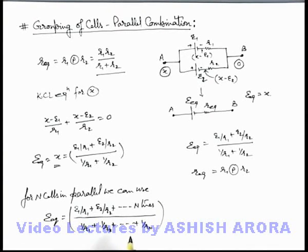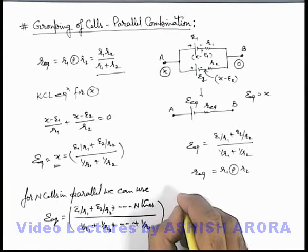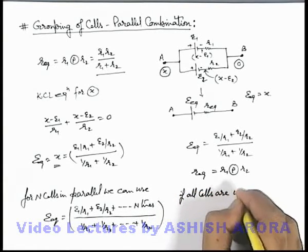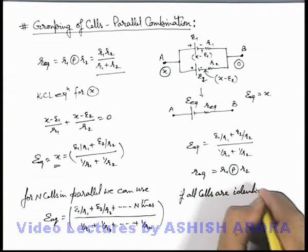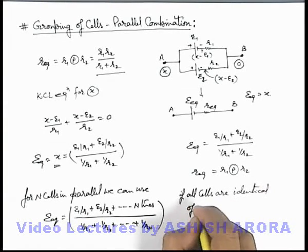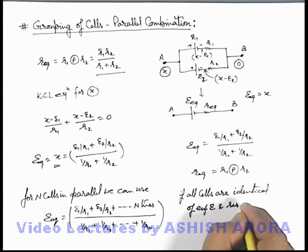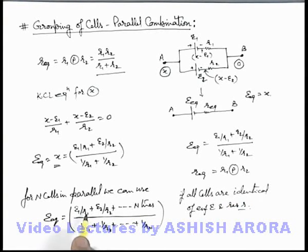And here one more thing which is important to be understood, that is if all cells are identical of EMF e and internal resistance r, then in this situation you can see if we take all EMF equal to e, here e can be taken out and numerator denominator gets cancelled out, and equivalent EMF can be written as same as that of an individual cell.